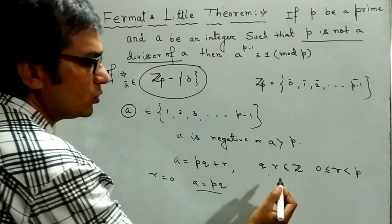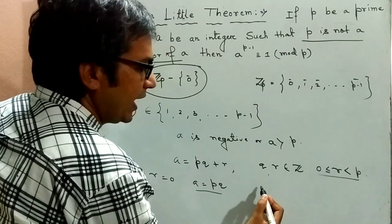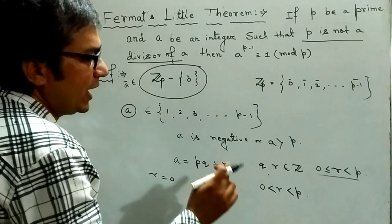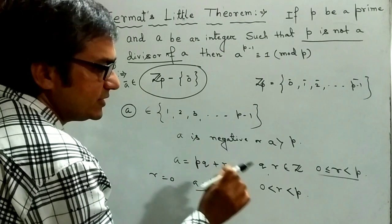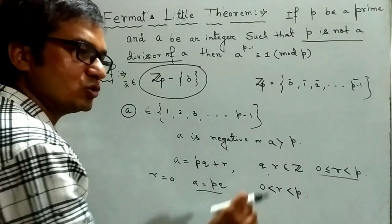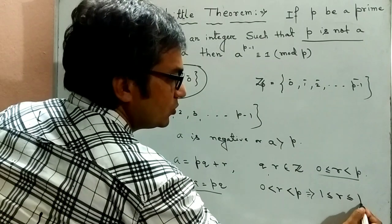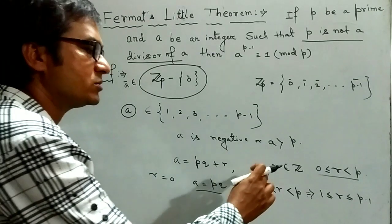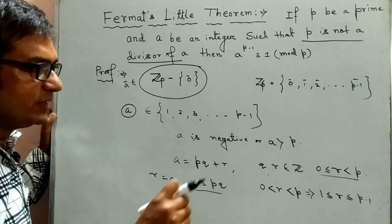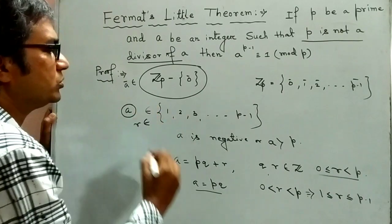Hence, we add the restriction of r as 0 less than r less than p. And since the restriction of r less than p, we can write this restriction as 1 less equal to r less equal to p minus 1. Because r is an integer. That is, r must belong to this set.